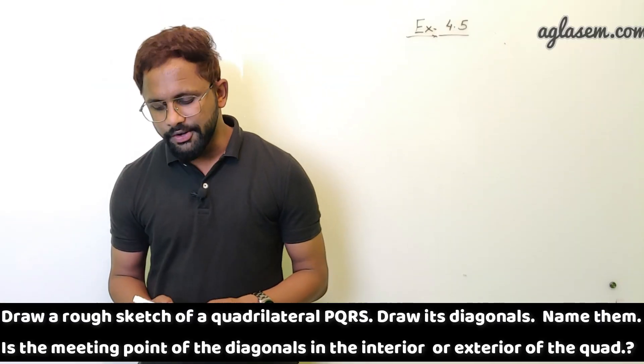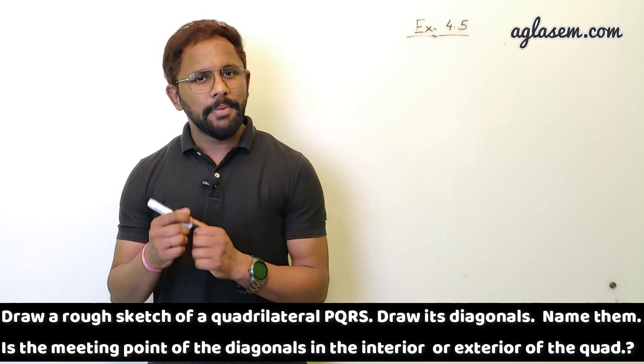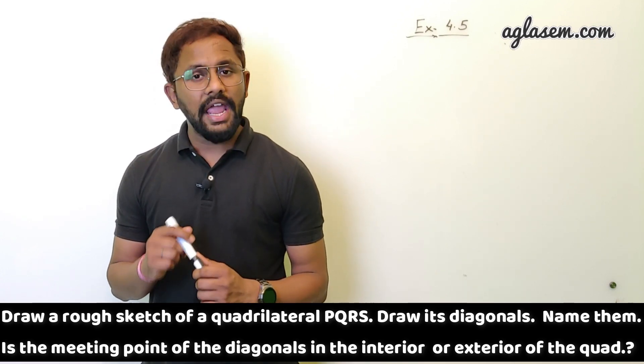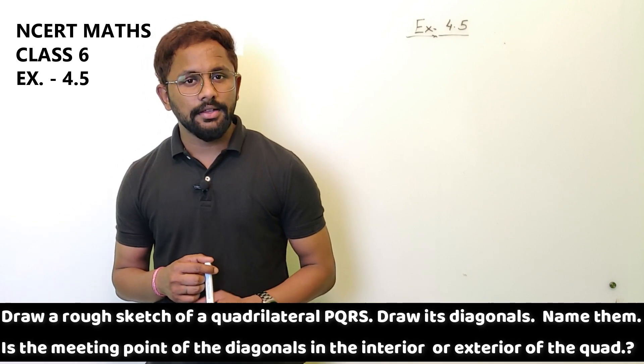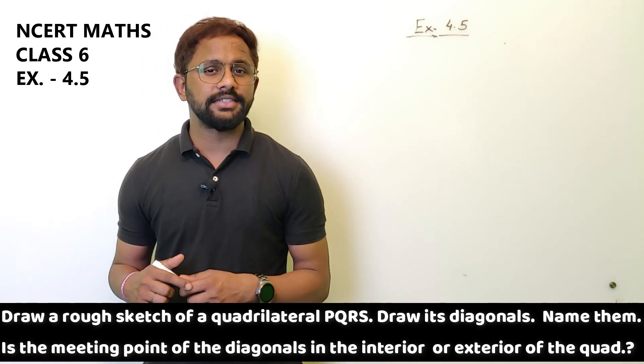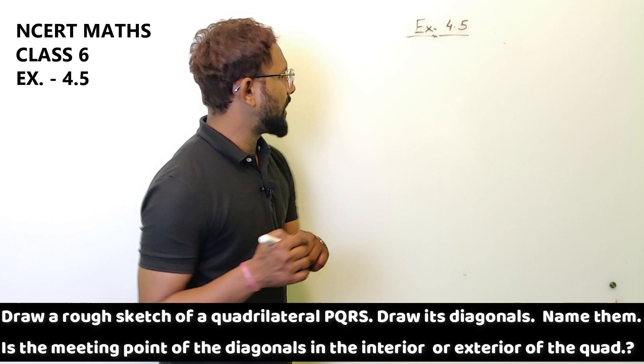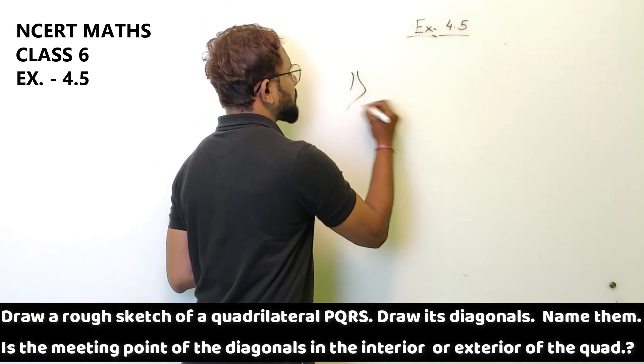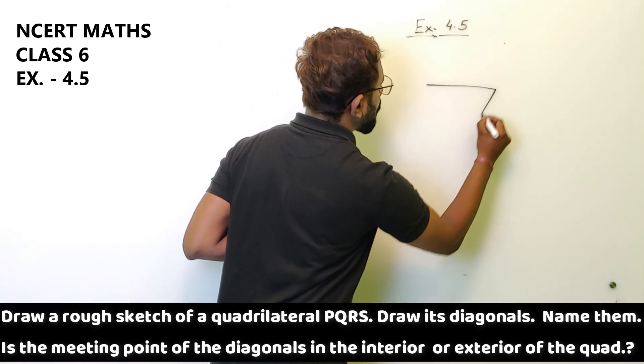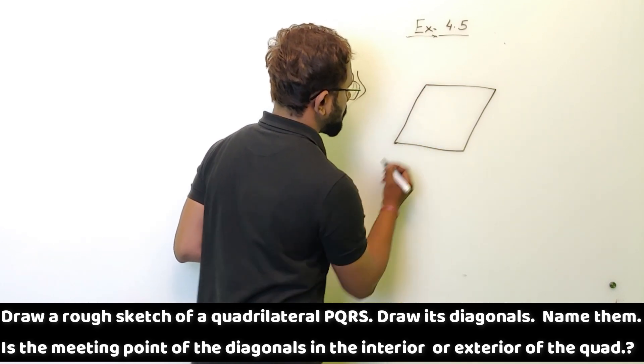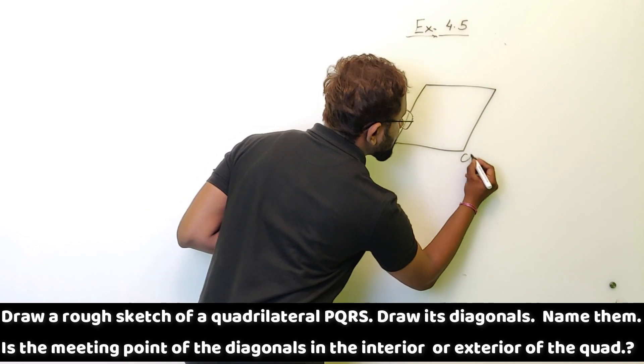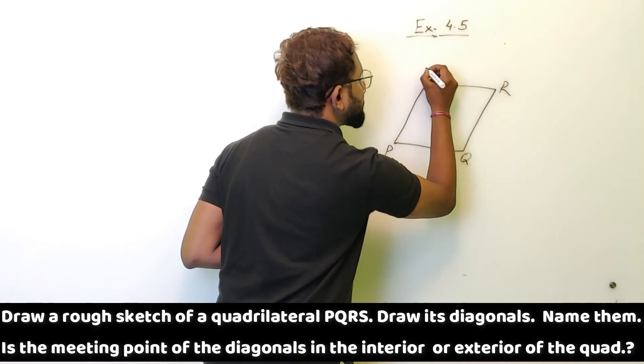The question is draw a rough sketch of a quadrilateral PQRS. Draw diagonals, name them. Is the meeting point of the diagonals in the interior or the exterior of the quadrilateral? So let's have the answer of this question. First, you have to draw a quadrilateral. A quadrilateral is a polygon which has four sides. Name it P, Q, R, and S.